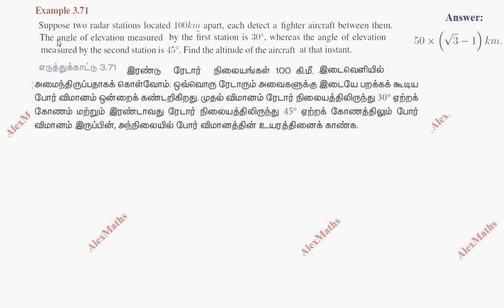Hi students, this is Alex here. Example 3.71: Suppose two radar stations located 100 km apart each detect a fighter aircraft between them.